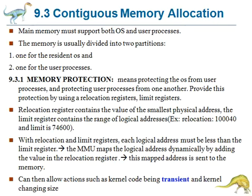The next topic in memory management is contiguous memory allocation. Here the main memory must accommodate both the operating system and various user processes. That's why the memory is usually divided into two partitions: one for the resident operating system and another for the user processes. In contiguous memory allocation, you have three different topics.